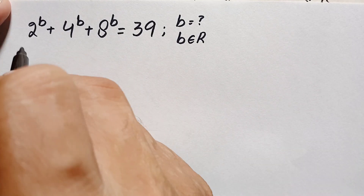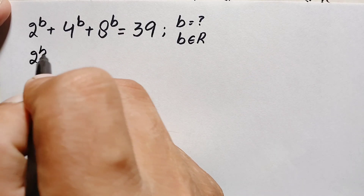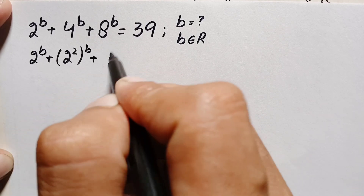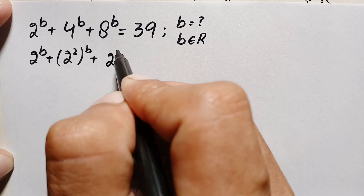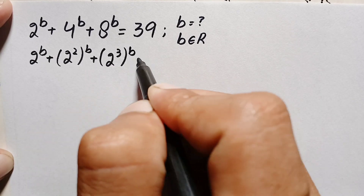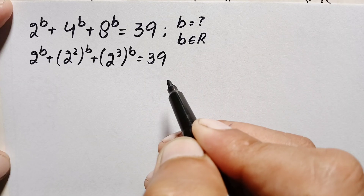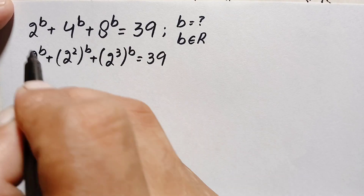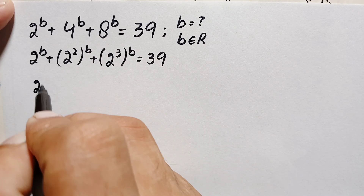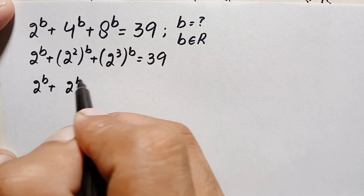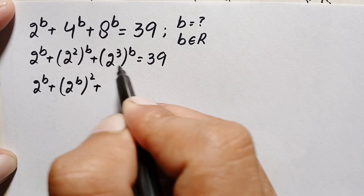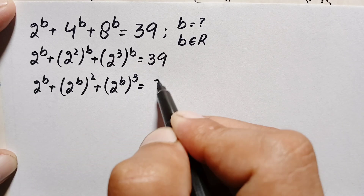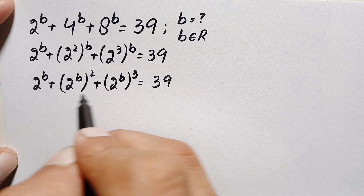First, on the left hand side, we can write 4 as 2 squared and 8 as 2 cubed. So the equation becomes 2 raised to power b plus 2 squared raised to power b plus 2 cubed raised to power b is equal to 39. Using an exponential identity, we interchange the position of the powers, giving us 2^b plus (2^b)² plus (2^b)³ equals 39.